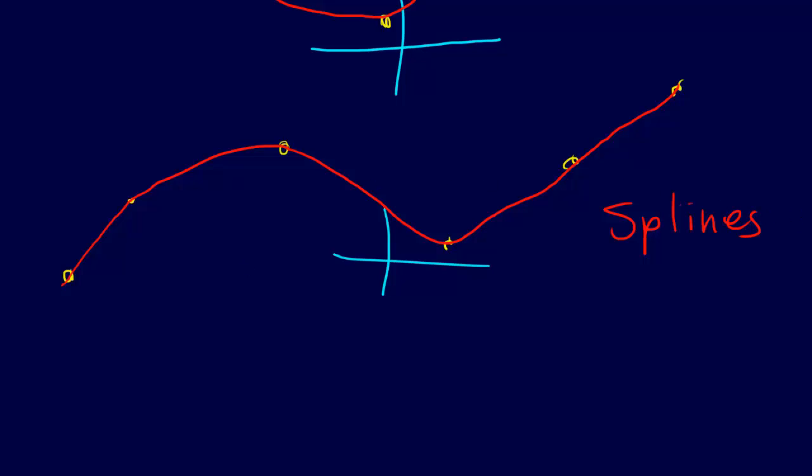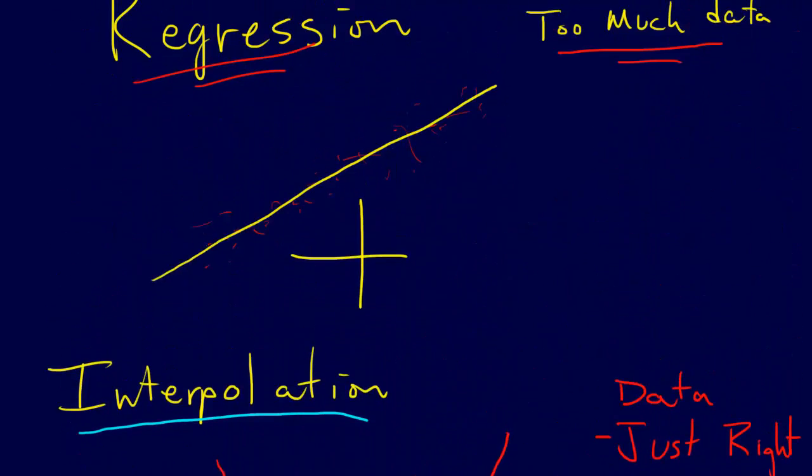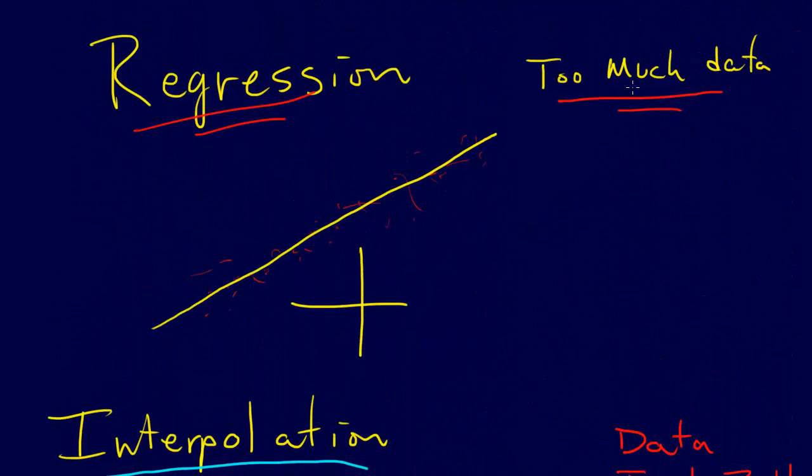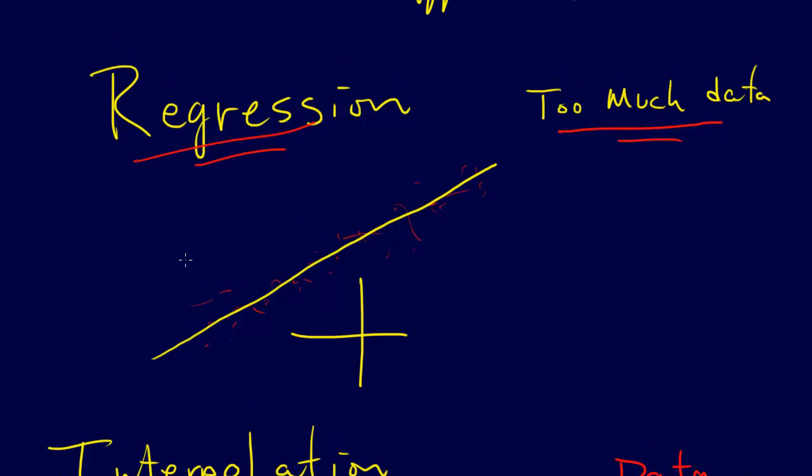the difference between interpolation and regression is that regression, you have too much data. You're trying to reduce it and simplify the behavior of what's going on. You don't go through all the data points in regression.